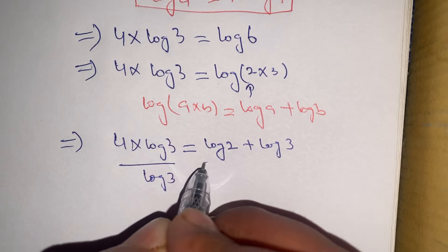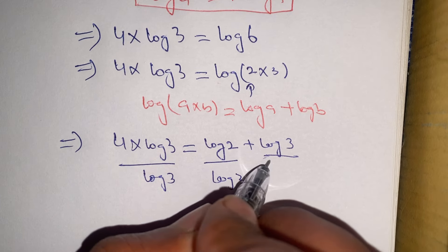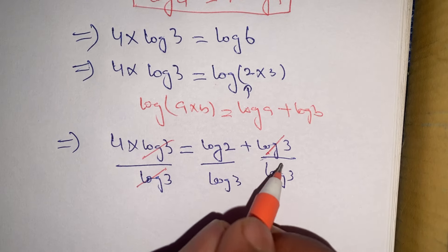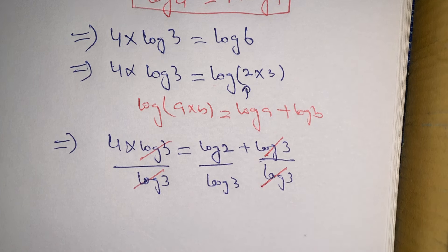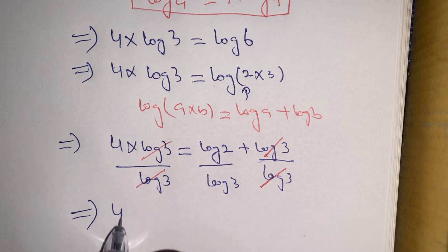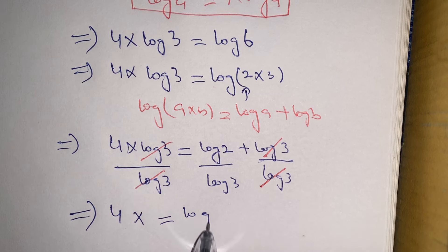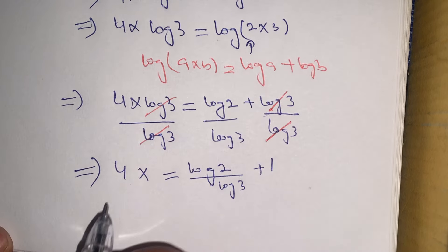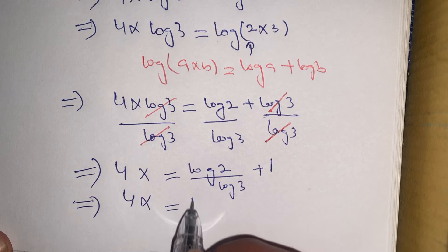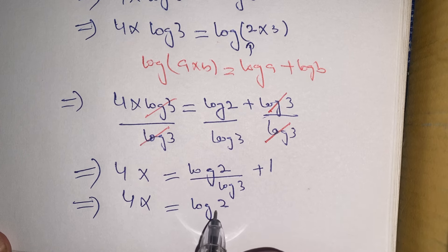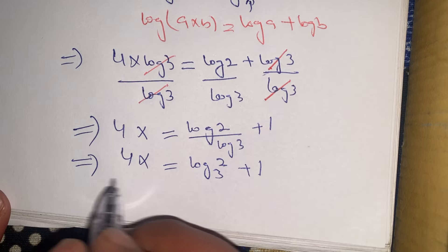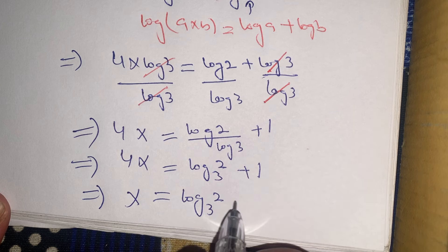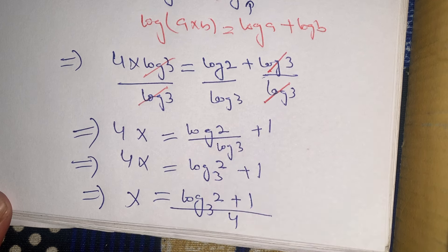Dividing by log 3, the left side gives 4x, and the right side becomes log base 3 of 2, plus 1. So we have 4x equals log base 3 of 2 plus 1. Dividing both sides by 4, we get x equals (log base 3 of 2 plus 1) divided by 4, which is the required value of x satisfying our given exponential equation.